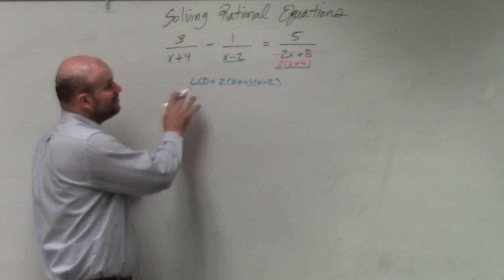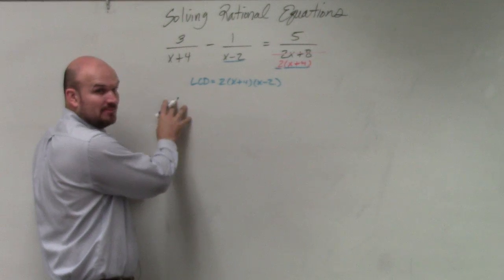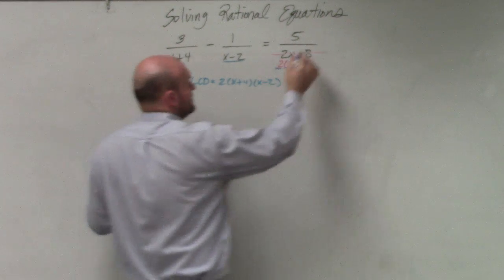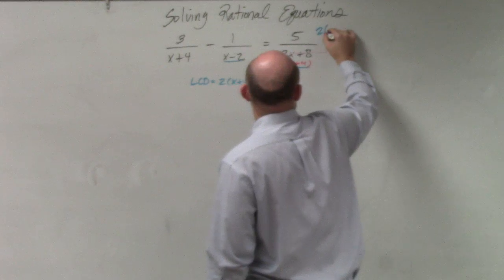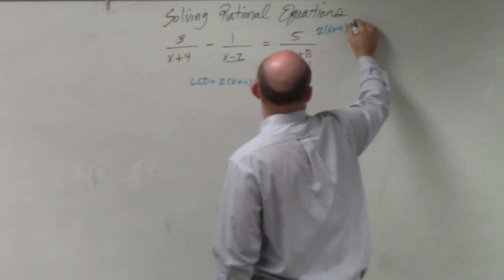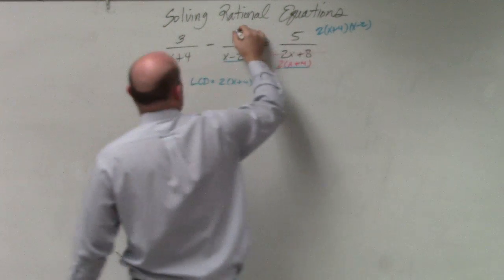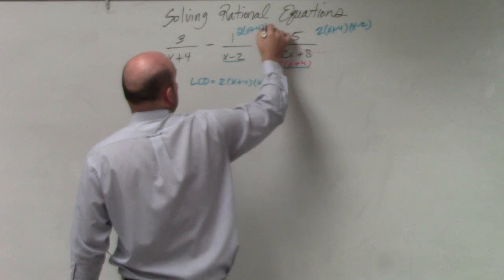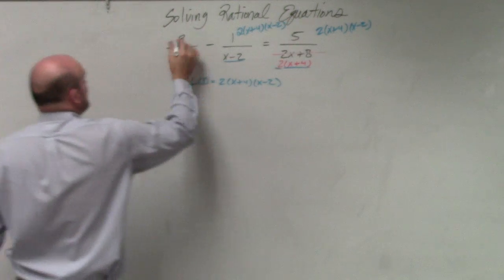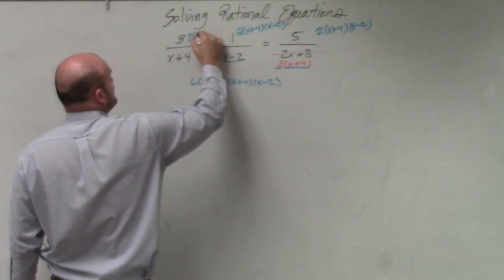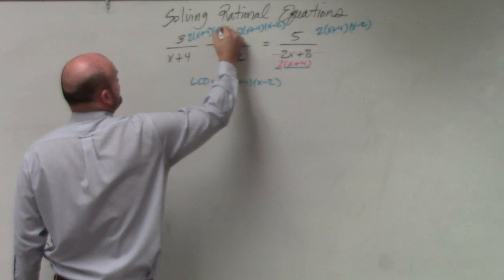But what we do have to do is multiply every single term by our LCD. So I have 2 times x plus 4 times x minus 2. I have 2 times x plus 4 times x minus 2. And then I have times 2 times x plus 4 times x minus 2.